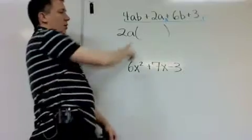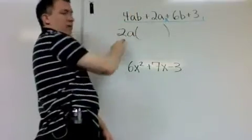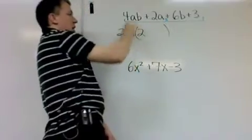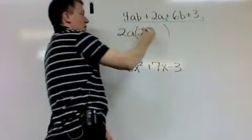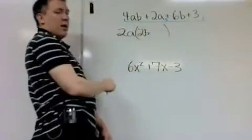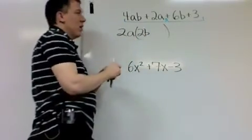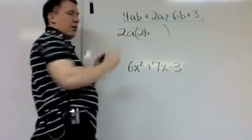Okay, and now I have parentheses, and now what goes in the parentheses is this divided by that, so 4 divided by 2 is 2. Okay, A over A cancels, divided by B, B is left. And again, you can see if you did it right, because if I multiply these two, I get 4ab.